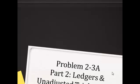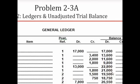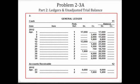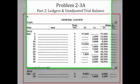Problem 23A Part 2: Ledgers and Unadjusted Trial Balance. Previously in this problem we recorded the journal entries for the transactions that happened in April. What we're going to do now is transfer those journal entries to the ledgers so we can get a final balance for each and every account, so we can then build the unadjusted trial balance.